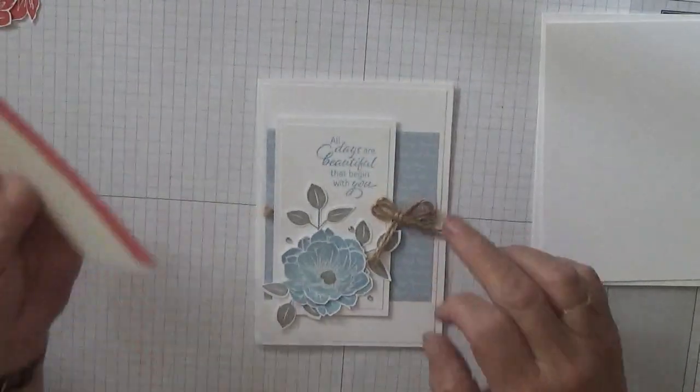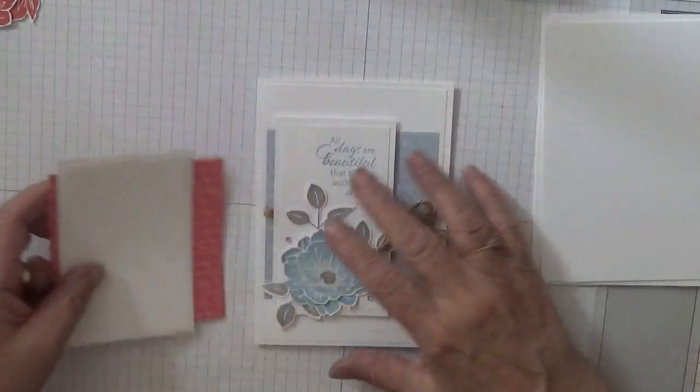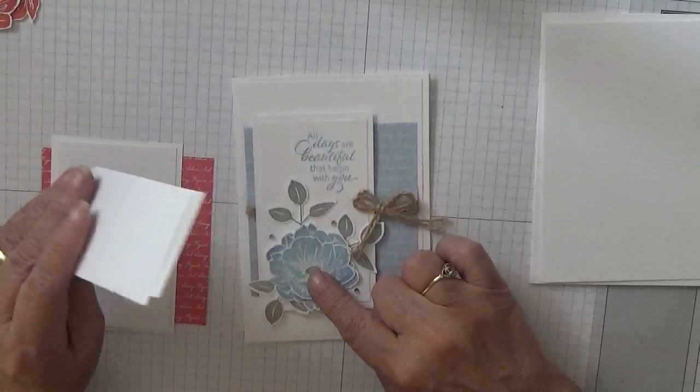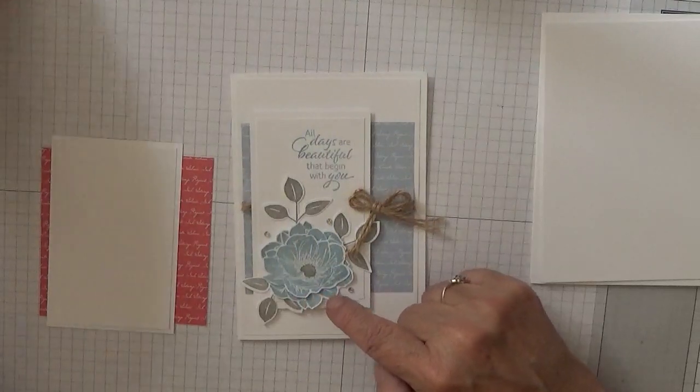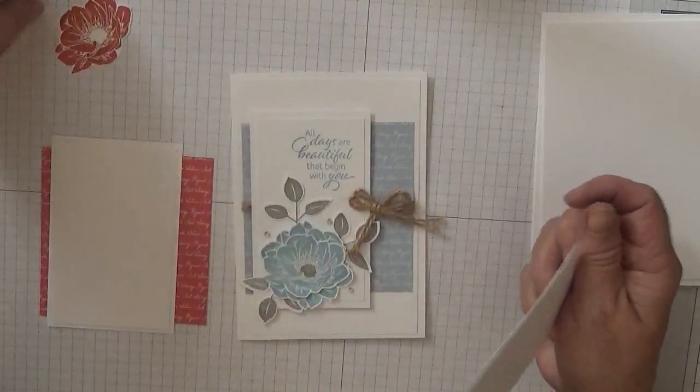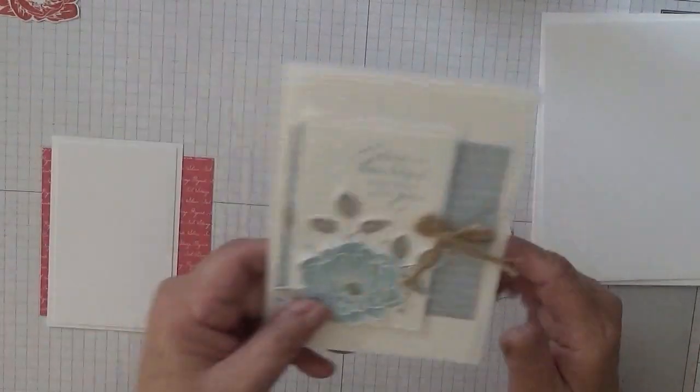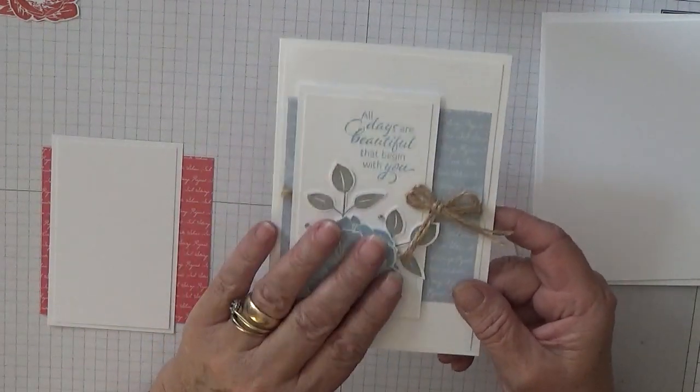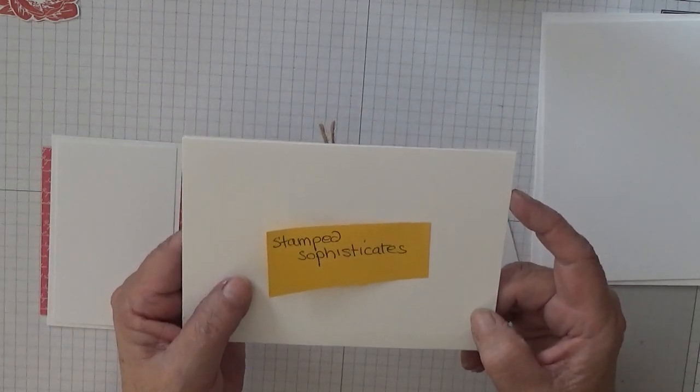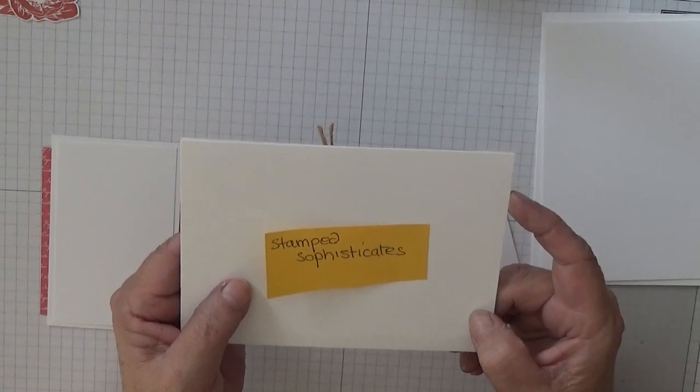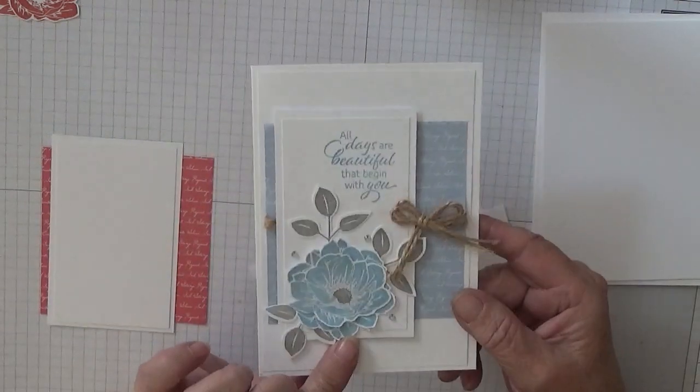I've also used some linen thread, mine's on a reel, it's quite thick. You also need some scraps for the flowers and the leaves. Now this is 3 flowers together. I have stamped and cut out 2, so we've got to do another one and we've got to stamp and punch out the leaves. This design I got from Pinterest and it's Stampin' Sophisticated, I think that's what it says, from Pinterest.